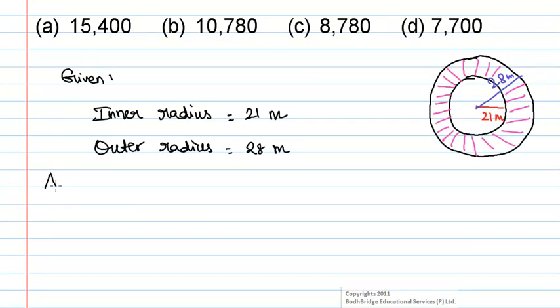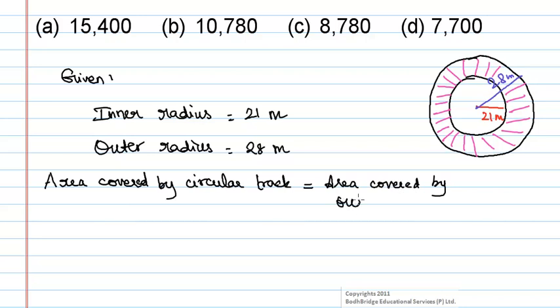From this we can say that area covered by circular track is equal to area covered by outer circle minus area covered by inner circle.